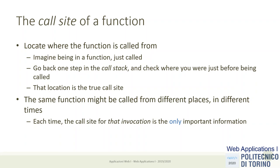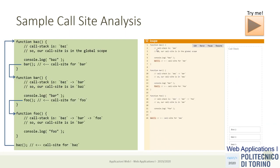If we are dealing with synchronous code, finding the call site is straightforward. With asynchronous code, the question of where the function was called is more difficult, because it may be called from the event queue. The same function may be called from different places at different times, but every time the call site for that specific invocation is the only important information.